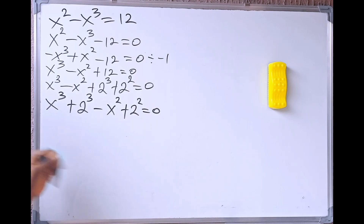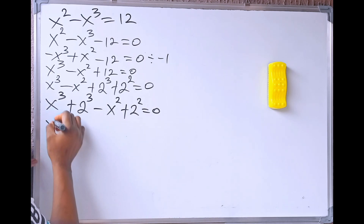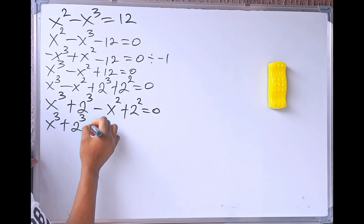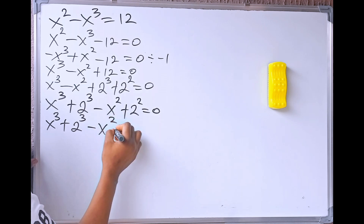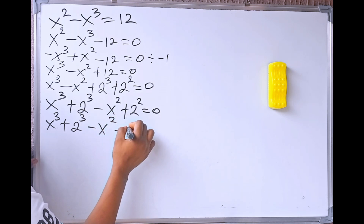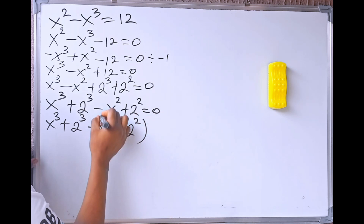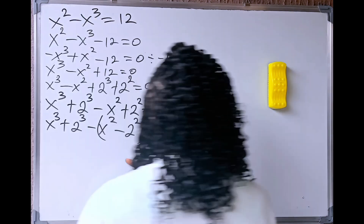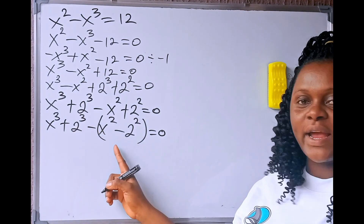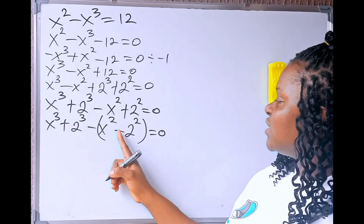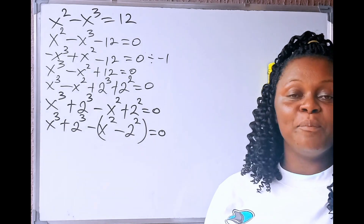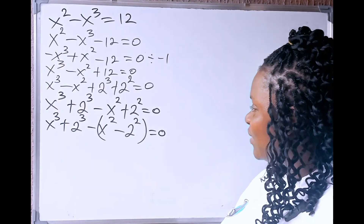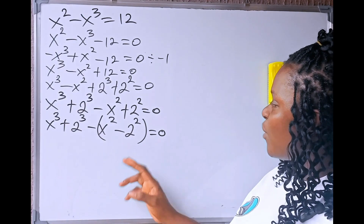Now, let's rewrite this. We are going to have x cubed plus 2 cubed, minus (x squared minus 2 squared), inside a bracket. Because if we use this minus to open this bracket, minus times minus will give us plus back, so we did not change anything.